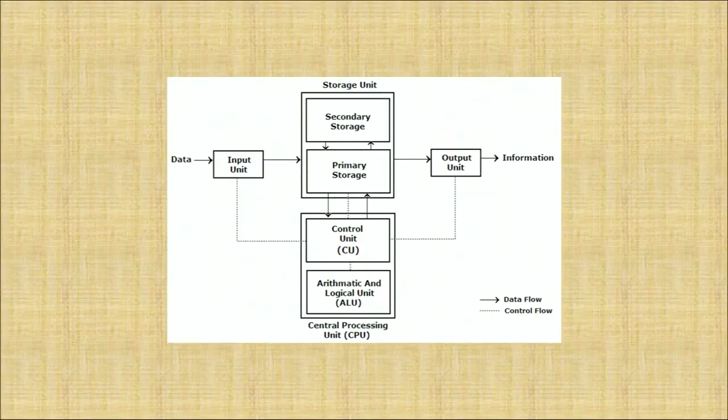The computer system works as follows: when we put data into the input unit, the computer processes it through storage and the CPU, and generates output called information. Data is raw information — what we collect from here and there and is not meaningful is called data. When the same is given meaningful context, it is called information. Therefore, the computer helps us as accountants to process accounting entries from raw data into meaningful information.